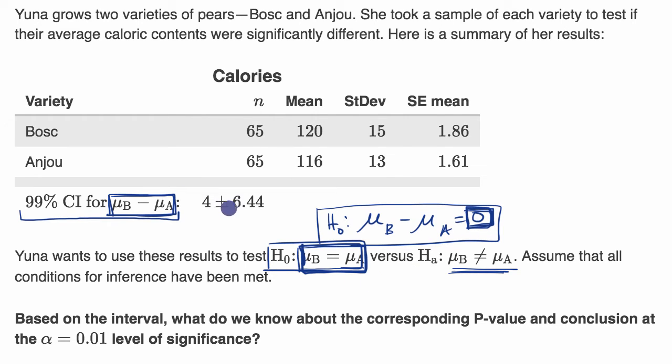Now, this interval does indeed overlap with zero. If you take four minus 6.44, you're going to get negative 2.44. So zero is definitely in the interval.